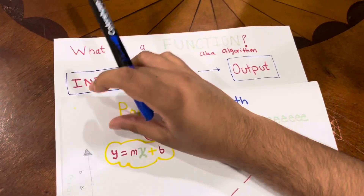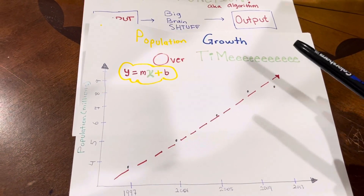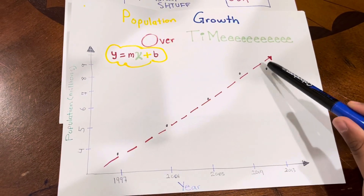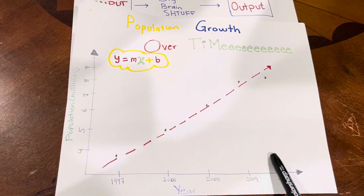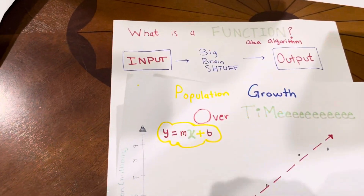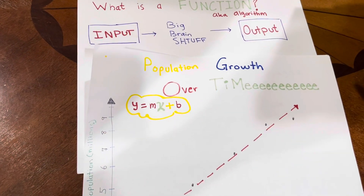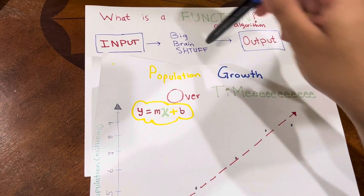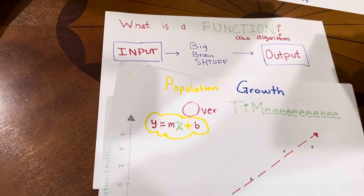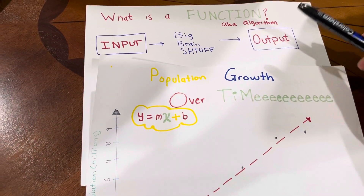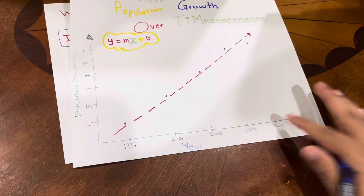Using the input-output model, I wanted to first predict population growth using past data on population. What I'm essentially doing is inputting the year into this function, and the output should be some population in the state of Virginia. By using past data, I will create an algorithm — this middle part — so that when I input future years like 2025 or 2030, it should give me a fairly accurate, or at least ballpark, estimate of the future population.